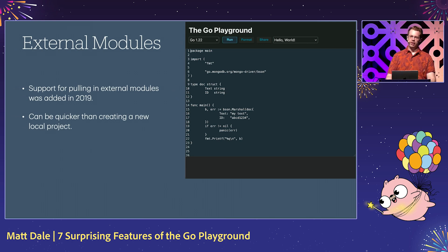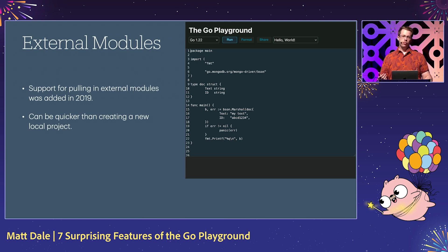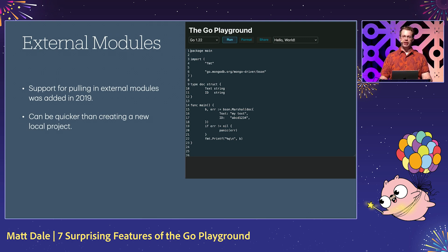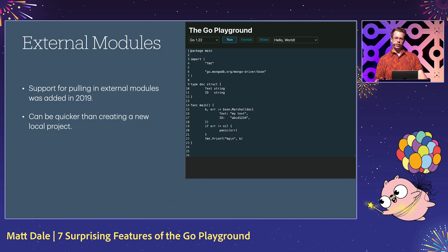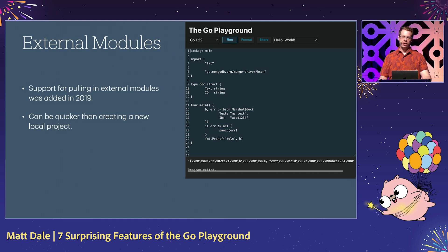When I started learning Go about 10 years ago, I remember being frustrated that the Go Playground couldn't pull in code from external libraries. Fortunately, when modules were added to Go, the Go team also added support for pulling in external modules in Go Playground examples. I find that especially convenient because setting up a local Go project with modules takes a bit more work than the old GOPATH-style projects. In this example, we're using the BSON library from the MongoDB driver module to encode a struct as a BSON document.